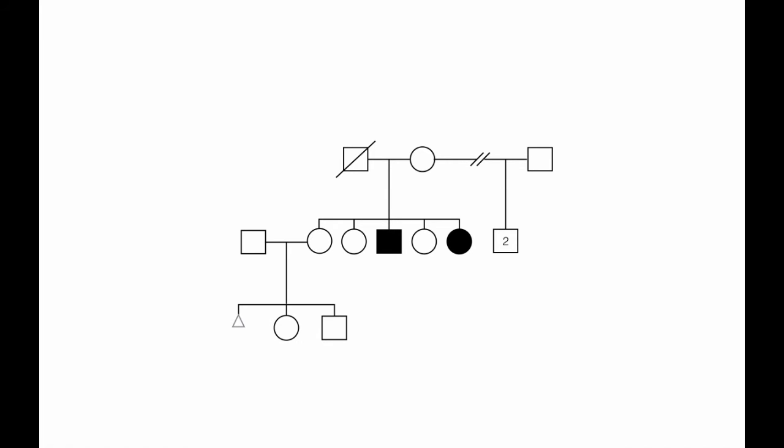In some cases, it's convenient to show multiple sibs by indicating a number of sibs within a symbol. And the proband, or the individual who brought the family to attention, is depicted by an arrow.